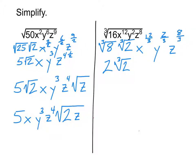Now simplify those fractions. x to the 12 thirds: 12 divided by 3 equals 4, so that's x to the 4th. y to the 2 thirds: 2 thirds doesn't reduce, and can't be turned into a mixed number, so it stays as y to the 2 thirds. For z to the 8 thirds: 3 goes into 8 two times with 2 left over, so that becomes z to the 2 and 2 thirds.